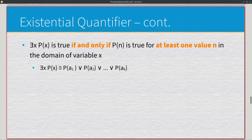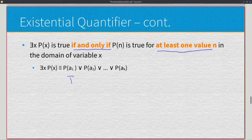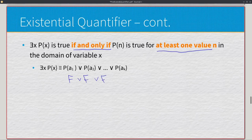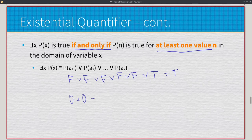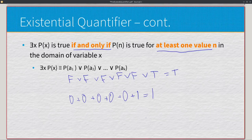∃x P(x) is true if and only if P(n) is true for at least one value n. We can break it down as P(a₁) ∨ P(a₂) ∨ P(a₃) ∨ … If everything is false the result is false, but the moment one value is true, the entire thing is true — like 0 + 0 + 0 + 1 = 1. That's basically how the existential quantifier works: we just need a single true value.